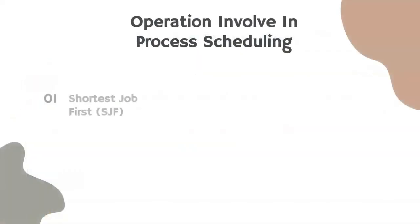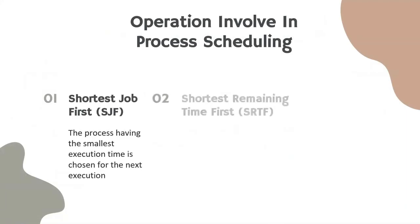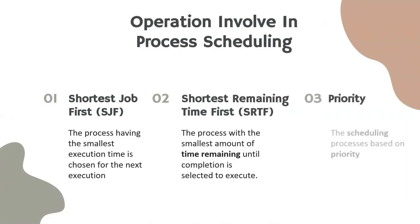Next are the operations involved in process scheduling. We have three process scheduling types. The first one is Shortest Job First, or SJF, where the process having the smallest execution time is chosen for the next execution.